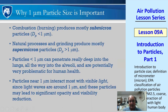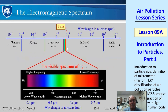Submicron particles can get all the way into the alveoli and are potentially very problematic for human health. They also interact most with visible light. The visible spectrum of light runs from about 0.33 microns in the ultraviolet up to about 0.7 microns in the infrared.